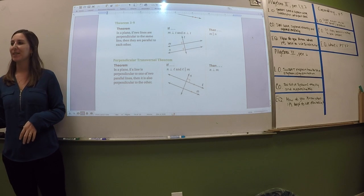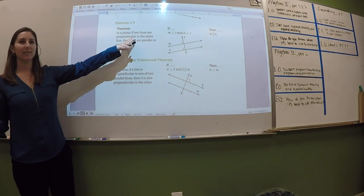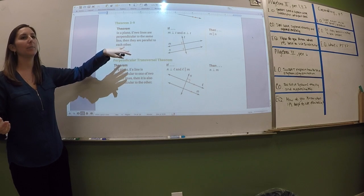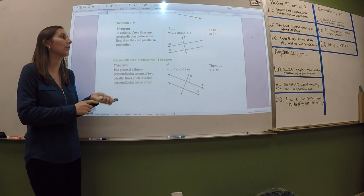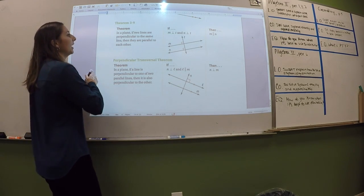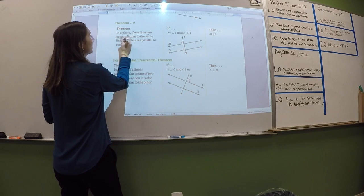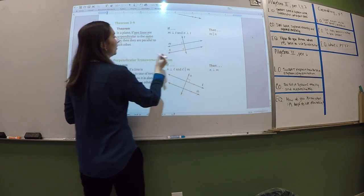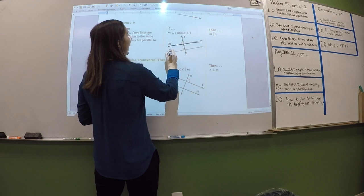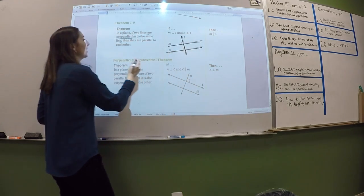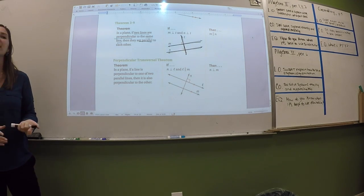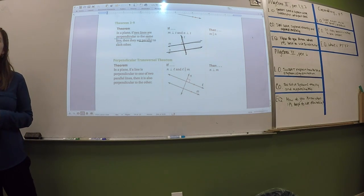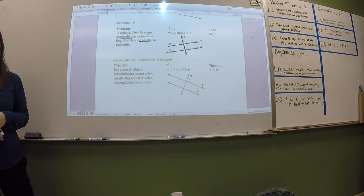Let's look at the next theorem, which also doesn't have a name. You don't really have to worry about the phrase 'in a plane' — if you leave that part out, I'm not going to penalize you for it. Technically all of these are in a plane. But this theorem says: if two lines are perpendicular to the same line — so if lines N and M are both perpendicular to line T — then they are parallel to each other. If two lines are perpendicular to the same line, they are parallel to each other.